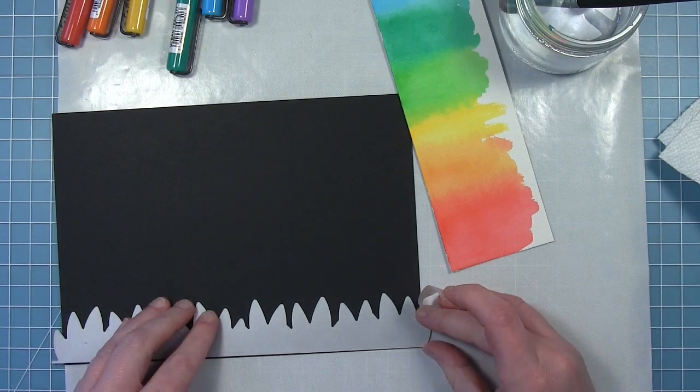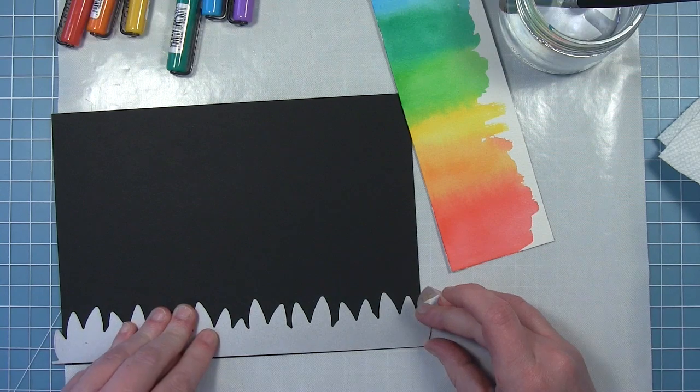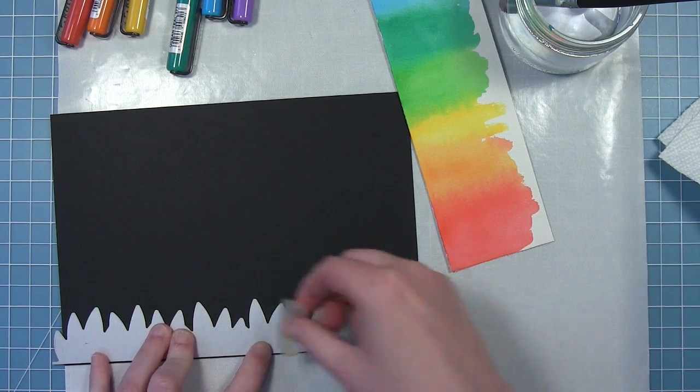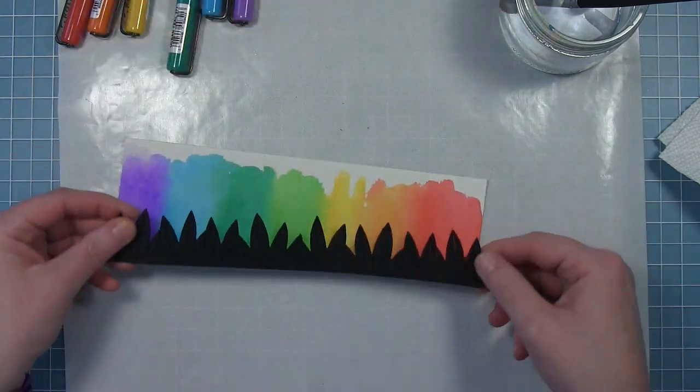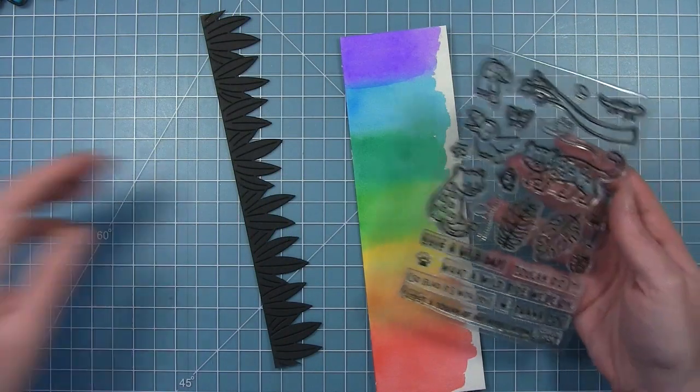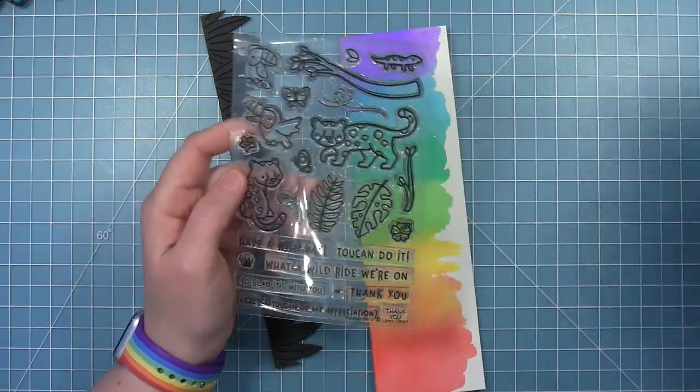And then I'm taking the new slimline tropical leaves border die, and I am cutting a piece of black cardstock. So this black cardstock is eight and a half inches long, so that's going to fit right along the edge of this really pretty watercolor rainbow.